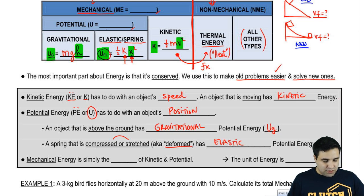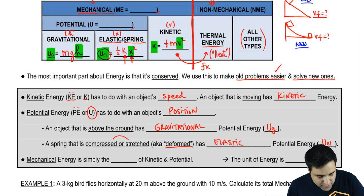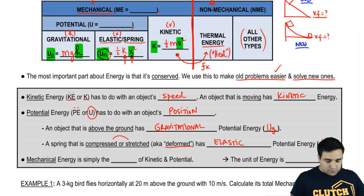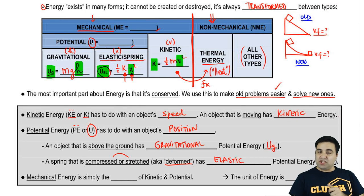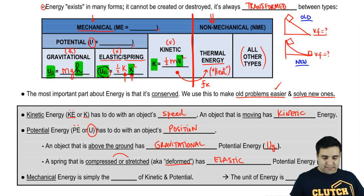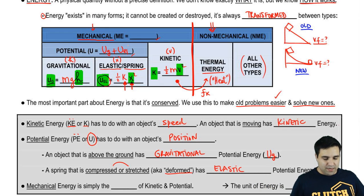So kinetic energy requires a V. Elastic potential energy requires an X. And gravitational potential energy requires an H. Over here, if you ever see the letter U by itself, without a G or without a U EL, U by itself just means U sub G plus U sub EL. So if you see U by itself, it means both U's. It's just a shortcut, simpler version, compressed version of writing it.